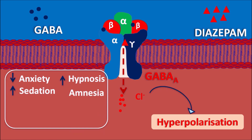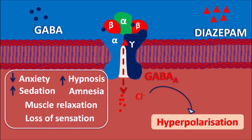Because anxiety is a stimulatory response, diazepam can reduce it. It can increase sedation, resulting in decreased aggressiveness, and increase hypnosis, resulting in induction of sleep. It can also reduce memory, resulting in anterograde amnesia — the loss of memory associated with current events. Diazepam can also produce muscle relaxation and reduce sensation, resulting in loss of sensation. All these effects are produced by diazepam acting on GABA-A receptors at the allosteric site.